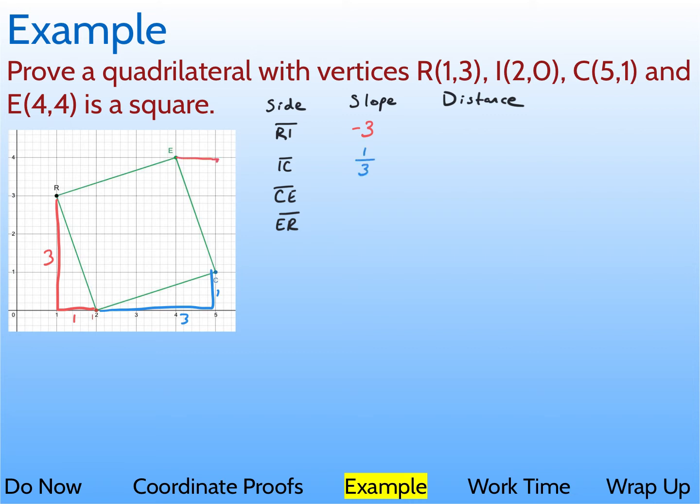For CE, it's again down 3 over 1, so negative 3. And finally, I think you can see that this one would also be a 3 and a 1 with a slope of 1 third. So that's all the slopes right there.